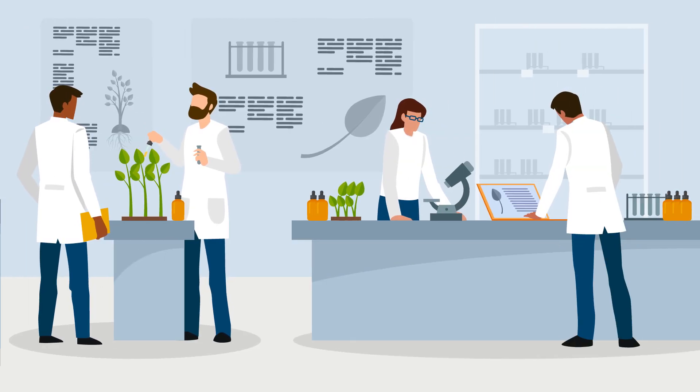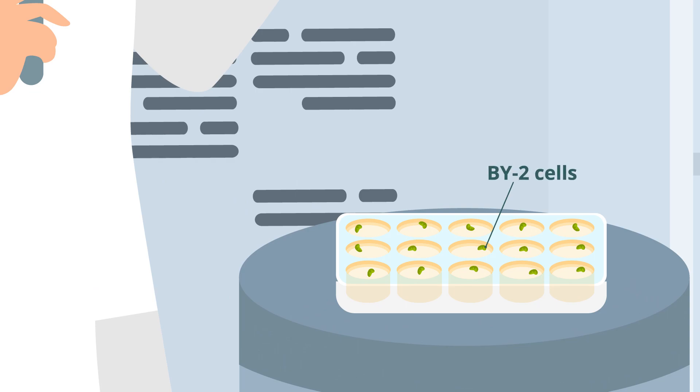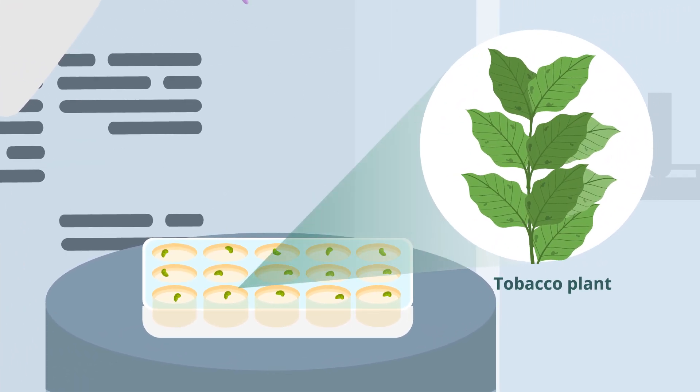Therefore, scientists at the Tokyo University of Science developed a novel screening method that relies on cultured BY-2 cells, which come from the tobacco plant.